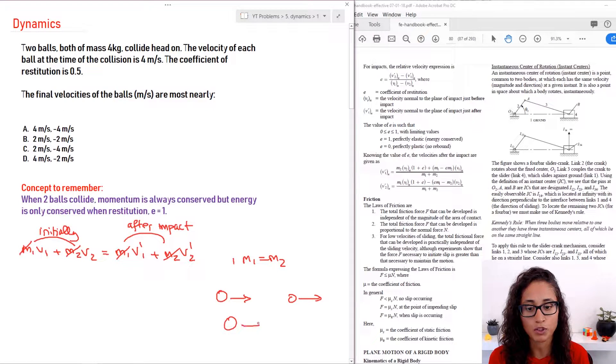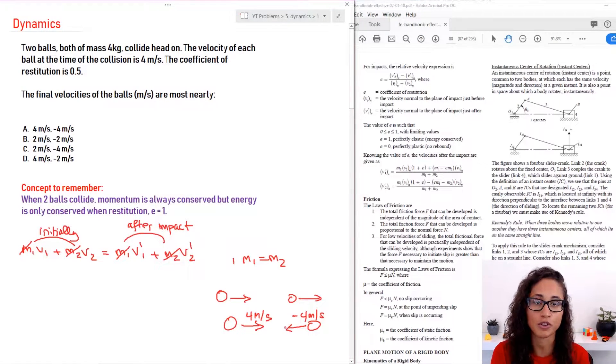They're not going in the same direction. So one of them is probably going this way and the other one is probably going this way. So this one is going to have four meters per second, but this one is going to be minus four meters per second. So this is where you got to be careful, because if they're both going with the same velocity four meters per second, the collision won't happen if they're going in the same direction.